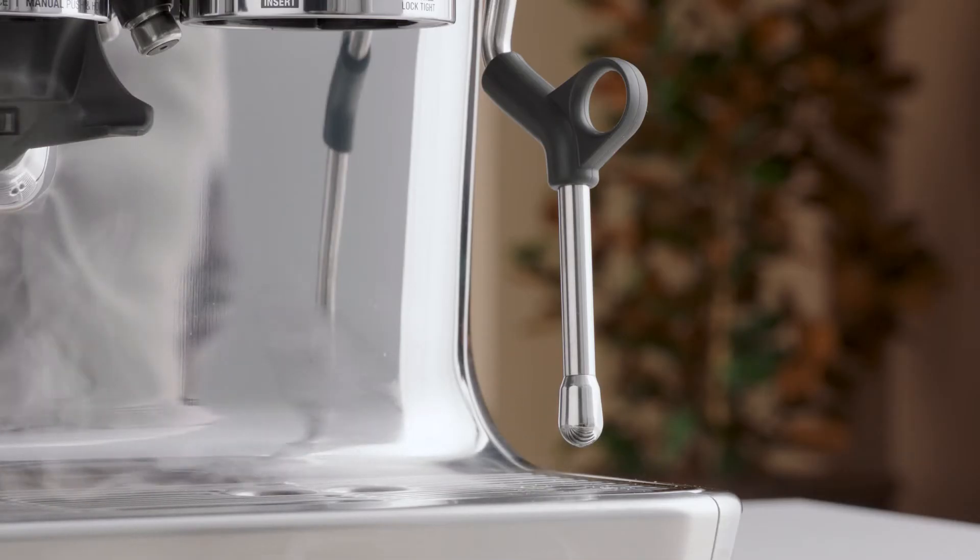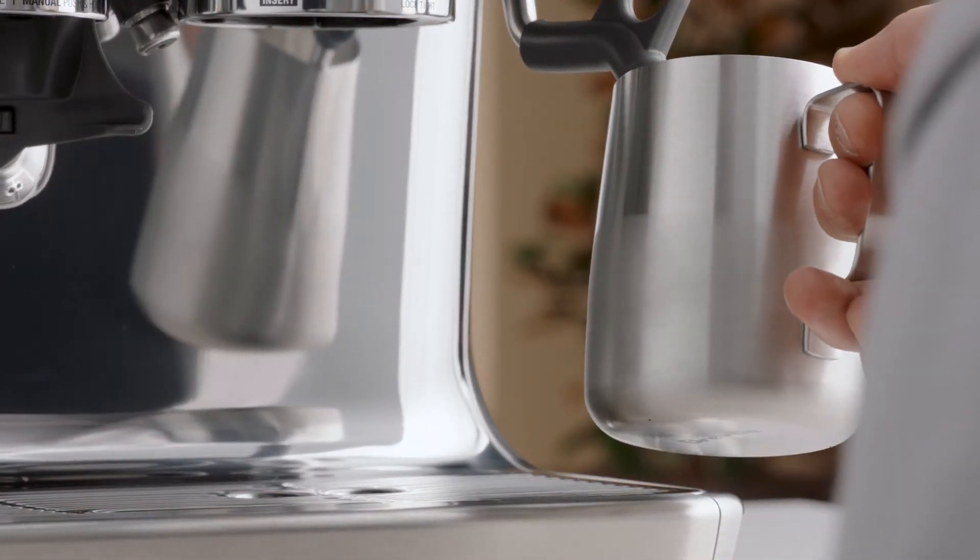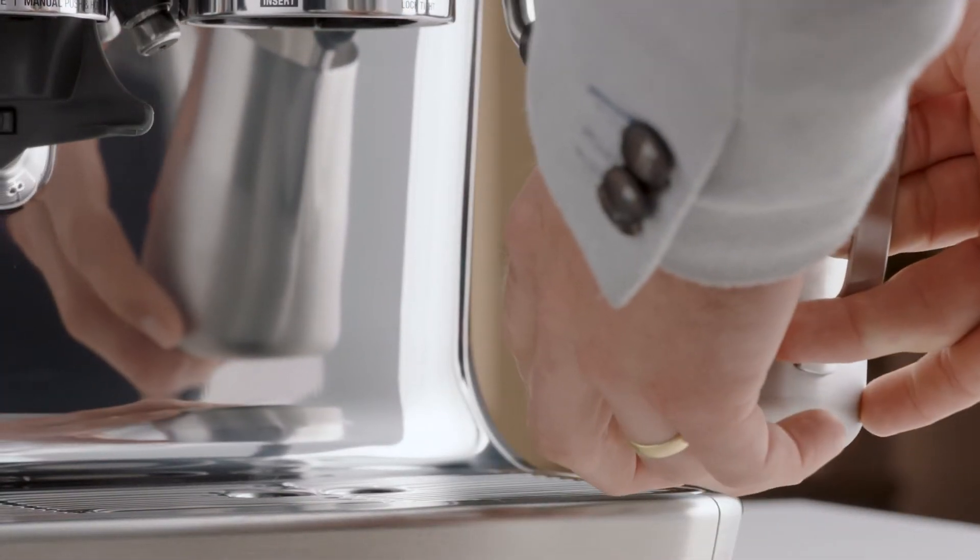Now, within eight seconds, insert the steam wand into the jug. You're looking for one to two centimeters below the surface of the milk.